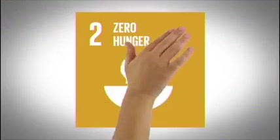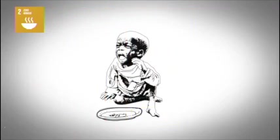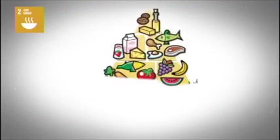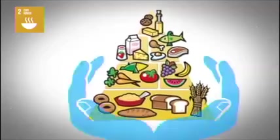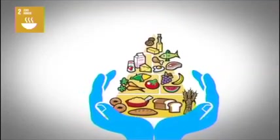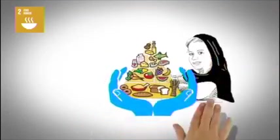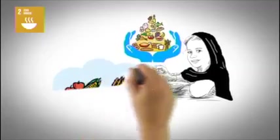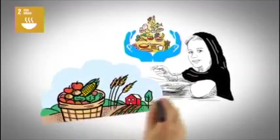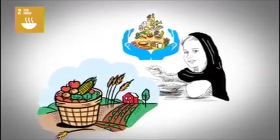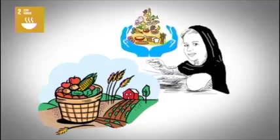Goal 2: End hunger, achieve food security and improve nutrition, and promote sustainable agriculture. We need to ensure access to safe, nutritious and sufficient food, sustainable food production, and implement resilient agricultural practices.